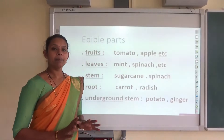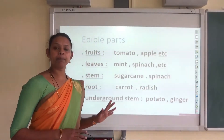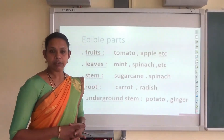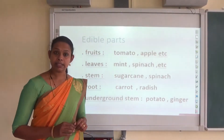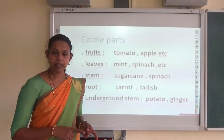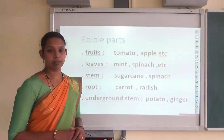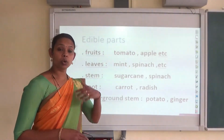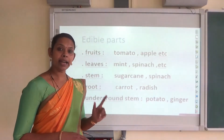Now, in the case of some other plants, more than one part is edible, like drumstick. Which part of the drumstick plant is edible? Its leaves are edible, fruit is edible, and also flowers are edible. So there are some plants whose more than one part is edible.